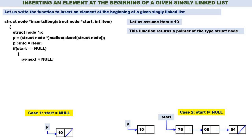In case 1, start should contain the address of this node, so start = p. That completes case 1. Now the else part for case 2: p->next should contain start — that is, p->next = start. See the arrow: p->next is equal to start.